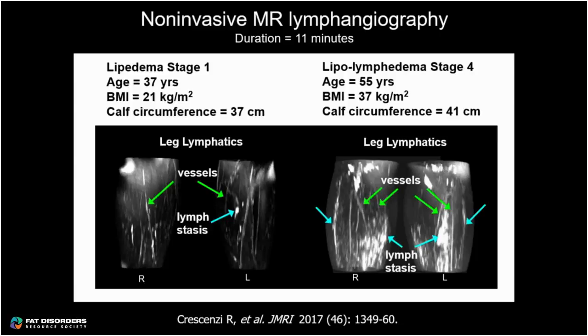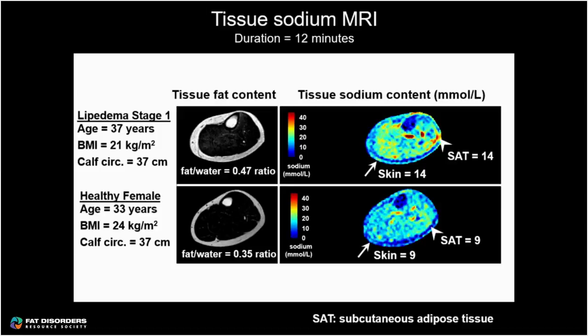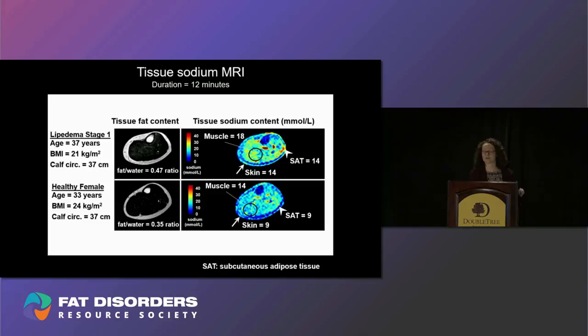Here are sodium images from a patient with stage one lipedema and a female without lipedema. These two females have similar calf circumference, but internally the fat image shows a slightly higher fat-per-water ratio in lipedema. The sodium images are color-coded on the right: warmer colors like yellows and reds correspond to higher tissue sodium, while blue regions are lower. Arrows point to the skin as an outer ring, the subcutaneous adipose tissue just below where a region of high sodium buildup is visible in the lipedema patient, and a circle within the muscle tissue. Overall, there is a greater amount of sodium deposition in the lipedema example.